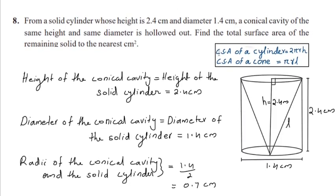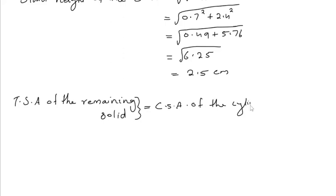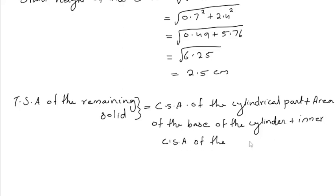Here we have to find the total surface area of this remaining solid. For this solid, we can see the curved surface and the base of the solid cylinder and the inner curved surface of this conical cavity. So the total surface area of the remaining solid is equal to the curved surface area of the cylindrical part plus the area of the base of the cylindrical part plus the inner CSA of the conical part.